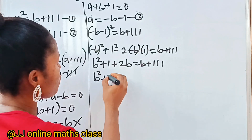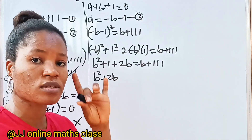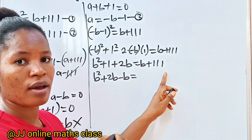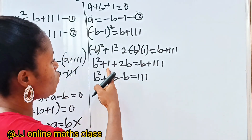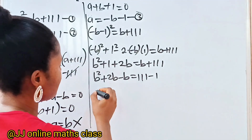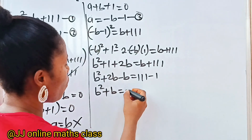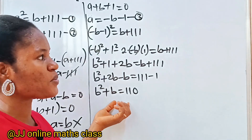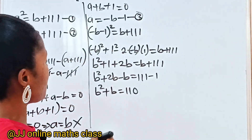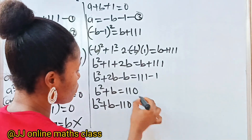So we have B squared plus 2B plus 1 equals B plus 111. Let's collect like terms. Moving B across gives minus B, and moving 111 across gives minus 111. So B squared plus 2B minus B equals 111 minus 1, which gives B squared plus B equals 110. So we now have the quadratic equation B squared plus B minus 110 equals 0.